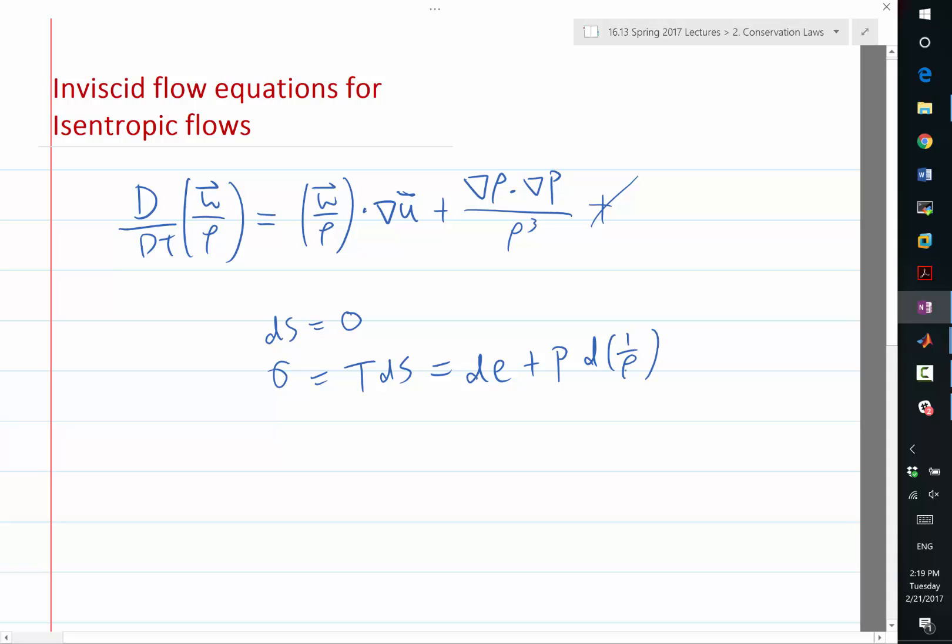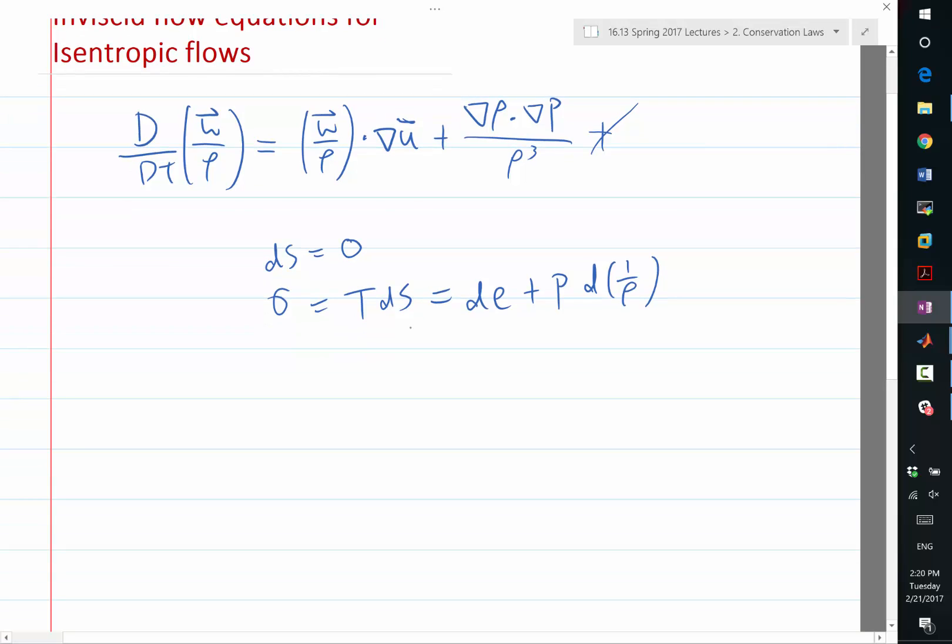So that's the heating received. You can figure out a set of relationships because dE can be represented as dT times cv. And this can be represented as minus p over rho squared d rho. And in addition to that, you know that p equals rho RT, which also gives you a set of relationships if you differentiate that.